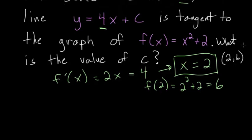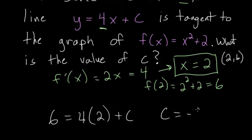So essentially, we just need to replace y with the value 6 and x with the value 2 and solve for c. So y is 6, and this equals 4 times an x value of 2 plus c. So we have 8 plus c here. And subtracting 8 from each side, we get that c is negative 2.